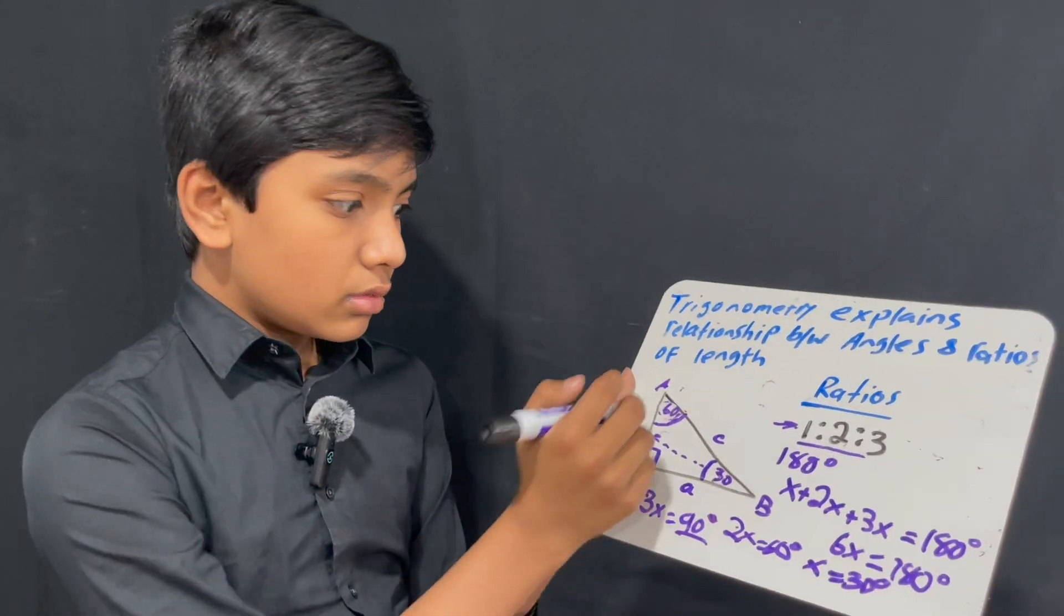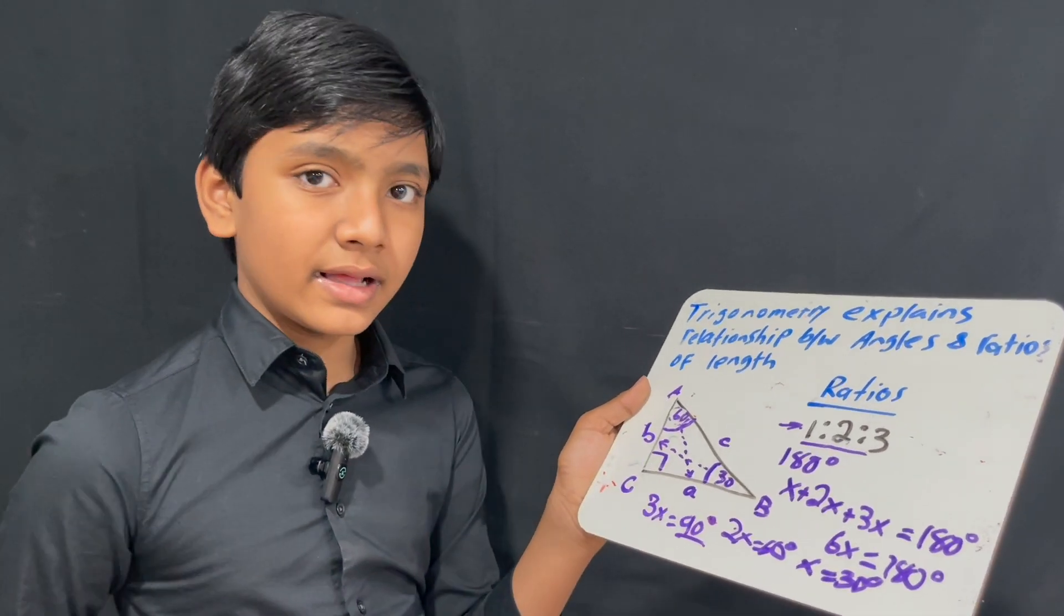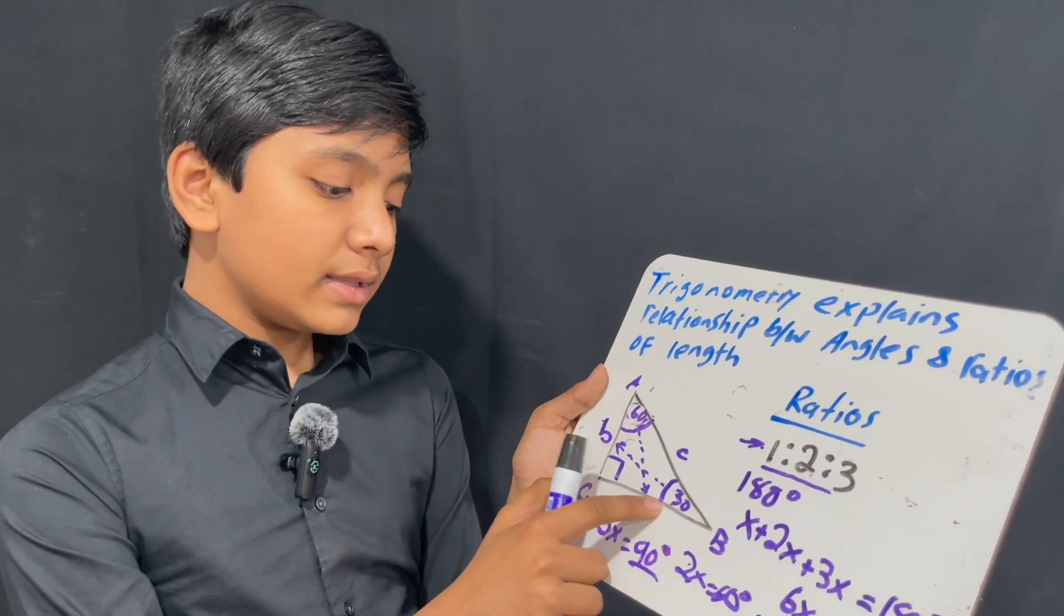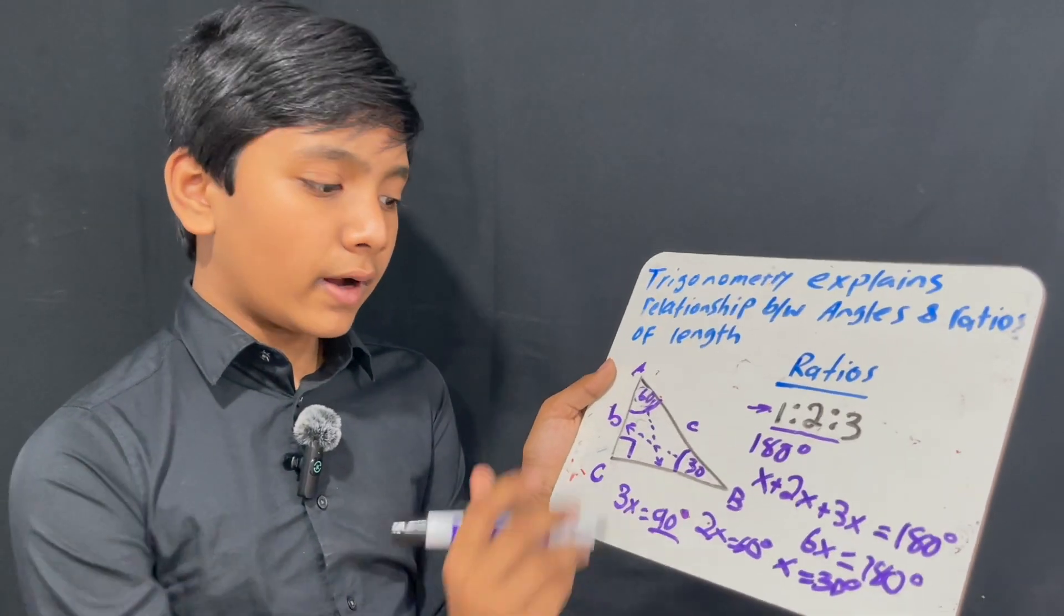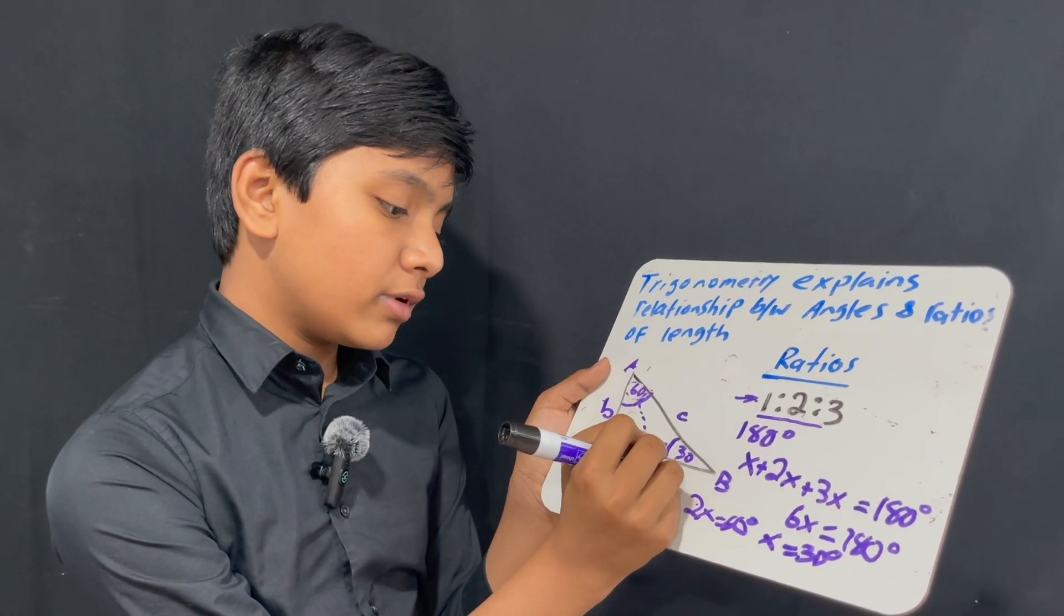Now, a is slightly bigger because it is opposite to the angle 60 degrees, which is slightly bigger than 30 degrees. So, in the case of a 30-60-90 triangle, a is equal to exactly b times the square root of 3.